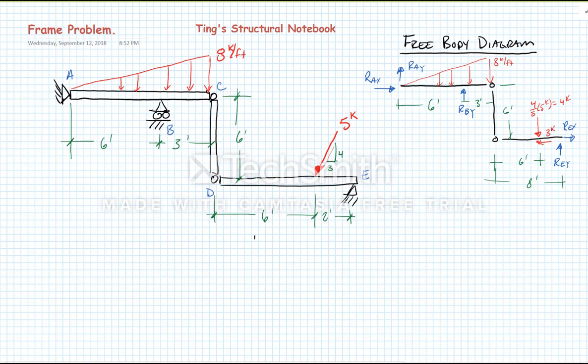So there's my free body diagram, and before I can check determinacy, I want to make sure that I'm stable. So let's inspect it for stability. Something is unstable if all of the external reactions are parallel. In this case, you can see we have REY and REX, so we have horizontal and vertical reactions. They're not parallel, therefore we have stability.